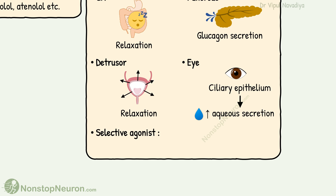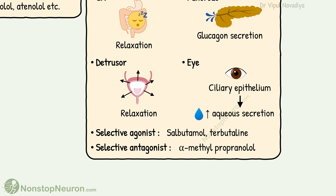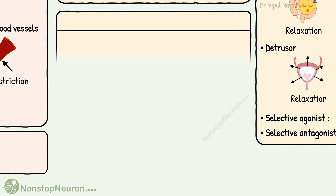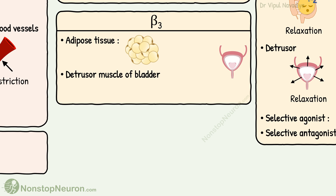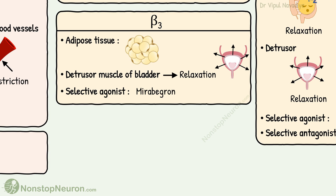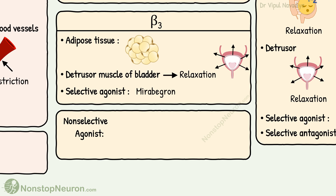Selective beta-2 agonists include salbutamol, terbutaline, etc., and the selective antagonist is ICI 118,551 (alpha-methylpropranolol). The non-selective agonist for all beta receptors is isoprenaline, and an example of a non-selective antagonist is propranolol.